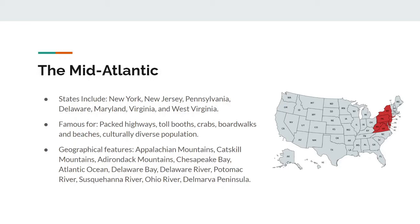Some very important geographical features of this area include the Appalachian Mountains, the Catskill Mountains, the Adirondack Mountains, the Chesapeake Bay, the Atlantic Ocean, the Delaware Bay, the Delaware River, the Potomac River, the Susquehanna River, the Ohio River, and finally the Delmarva Peninsula.